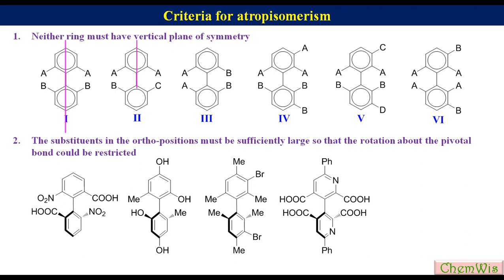There are some exceptions: even biaryl compounds with four constitutionally identical substituents may be chiral if these are connected pairwise through two bridges, as in D2-symmetric molecules.